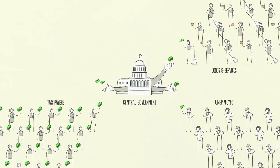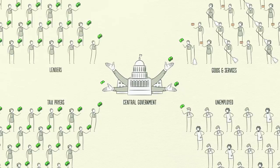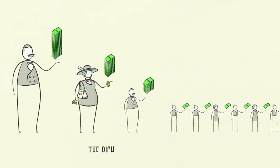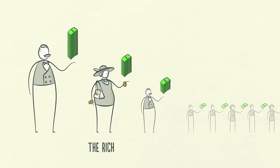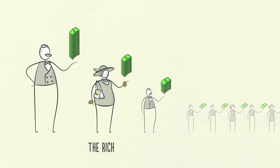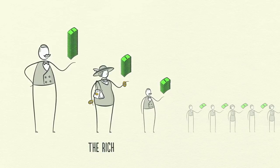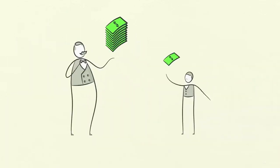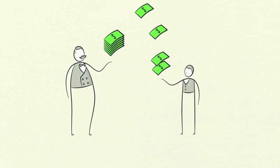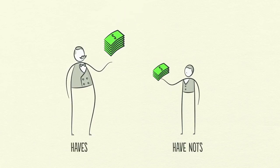To fund their deficits, governments need to either raise taxes or borrow money. But with incomes falling and so many unemployed, who is the money going to come from? The rich. Since governments need more money and since wealth is heavily concentrated in the hands of a small percentage of the people, governments naturally raise taxes on the wealthy, which facilitates a redistribution of wealth in the economy from the haves to the have-nots.